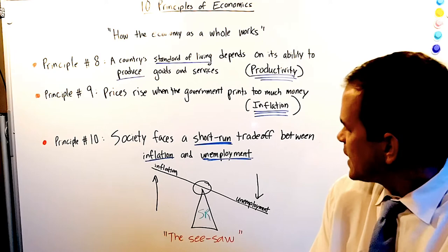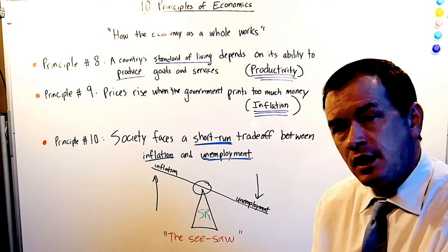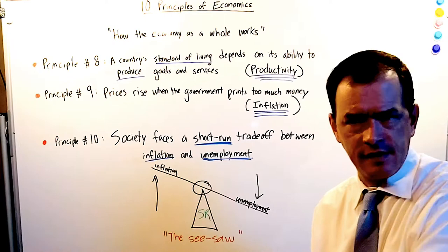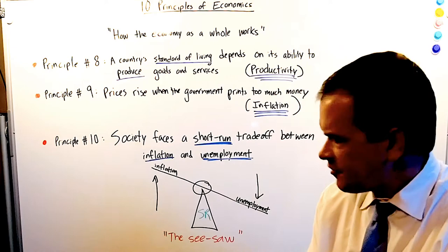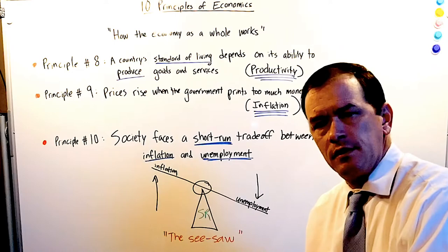Principle number 10: Society faces a short run trade-off between inflation and unemployment. Short run, I think a year or less. So a year from now, back to now, that's the short run. After a year, we're starting to talk a long run. Inflation is overall rise in prices. And unemployment is people who want to work but can't find work.